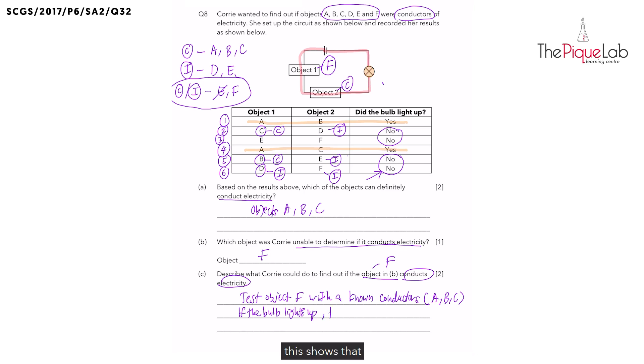This shows that object F, is it an electrical conductor or an insulator? It must be an electrical conductor that allowed electricity to flow through. So this shows that object F allowed electricity to flow through. And hence, a conductor of electricity.